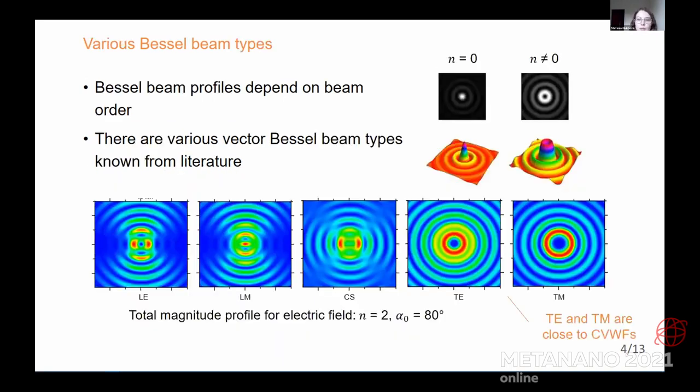One Bessel beam can be different from another one, first of all, by its order. In the simplest case or paraxial case, you can see that Bessel beams of zero order have its maximum in the center, maximum intensity, and non-zero order Bessel beams have intensity in the first ring. But there are also various vector Bessel beam types, they are known from literature, and here you can see total magnitude profiles for various Bessel beam types.